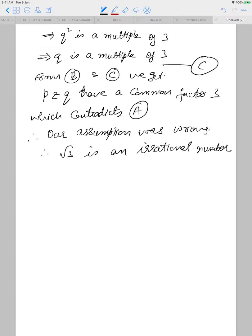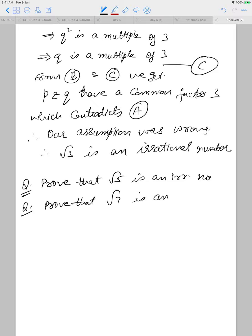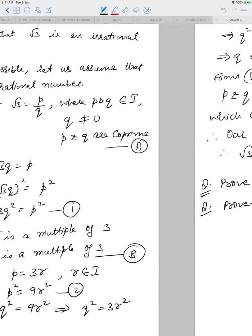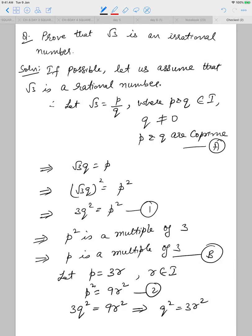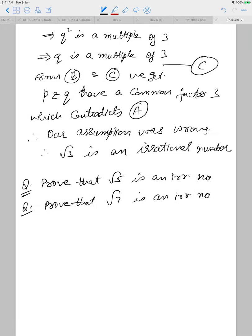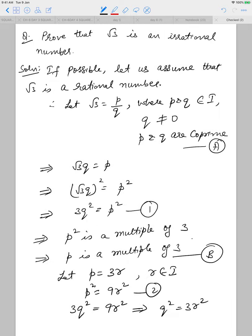As homework, you can write the proof for root 5 and root 7 being irrational numbers. If you write two or three proofs on your own, you will understand the exact procedure. The only difference will be the multiple: for root 5, p and q will come out to be multiples of 5; for root 7, multiples of 7. Otherwise there is no major difference in all the proofs.